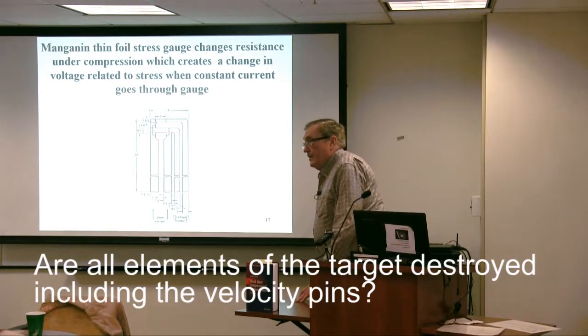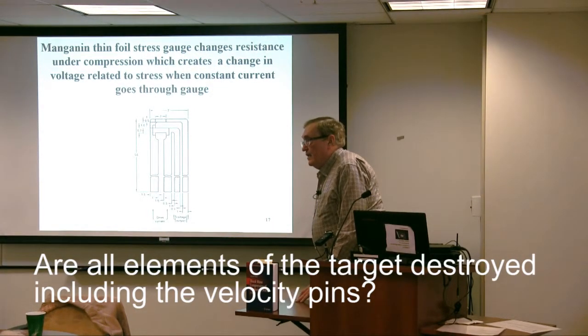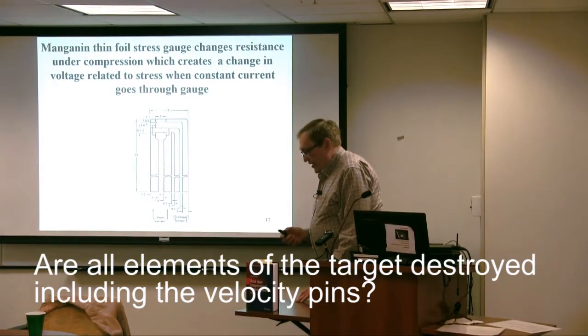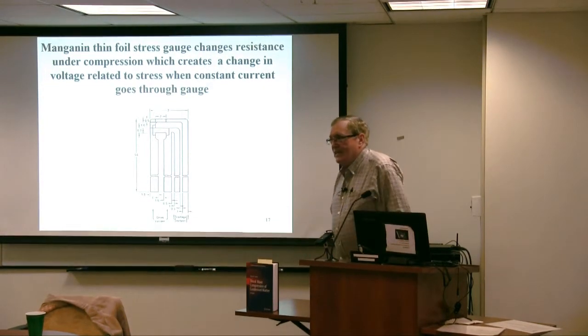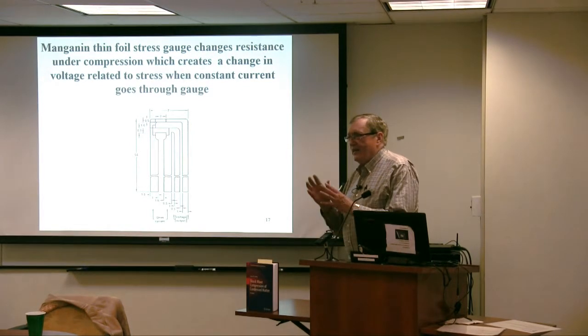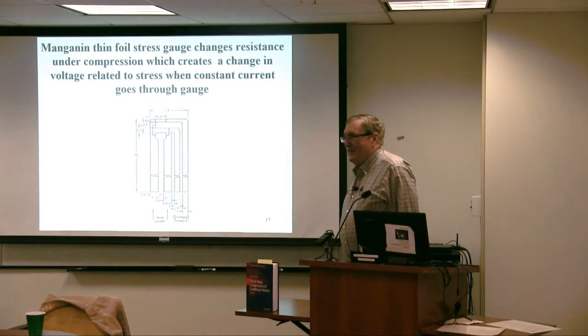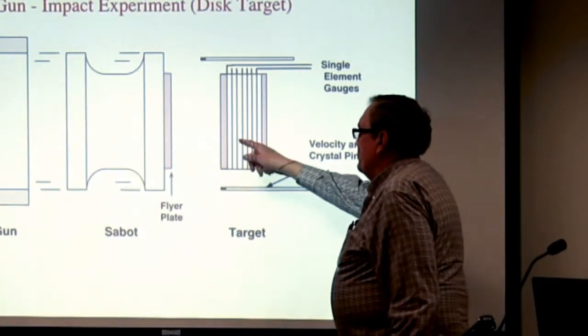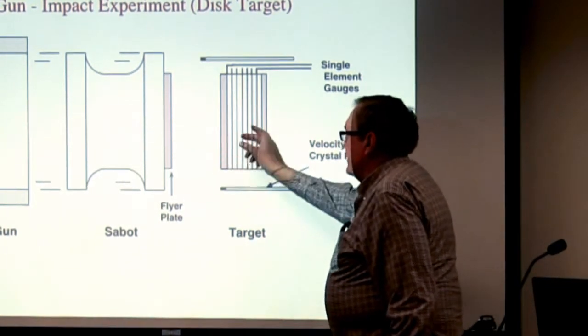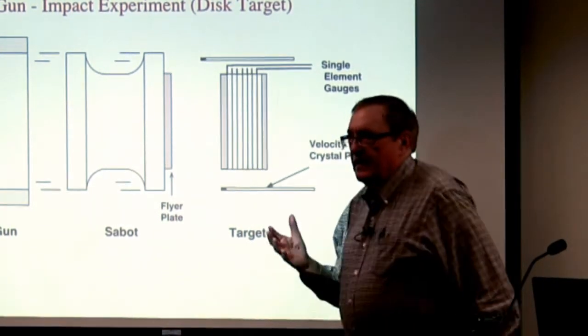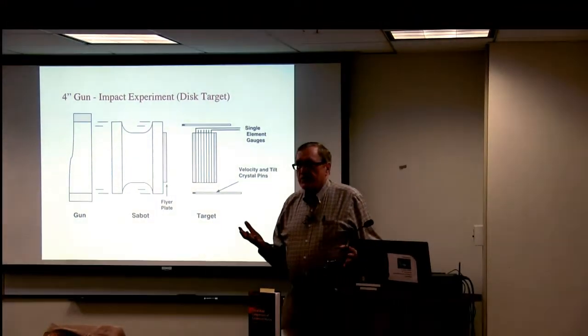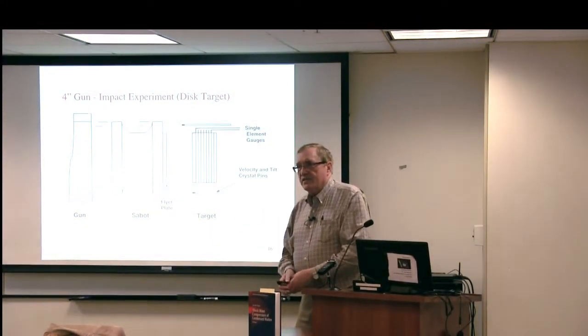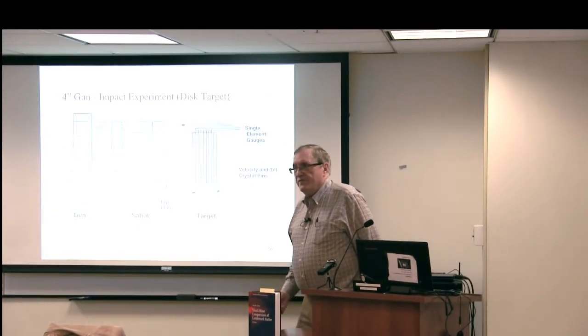Are all elements of the target destroyed including the velocity pins? Yes, that's one thing you have to get used to. You recover little fragments and sort through them, but you never can use the same targets twice. Everything is destroyed. Since we can get this velocity, when you have a target like this, we know the distance between the gauges and we're going to see that on an oscilloscope, so we know the distance and we know the time, so we have the velocity of the wave going through.